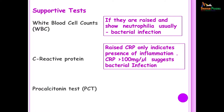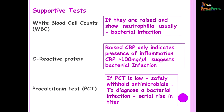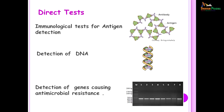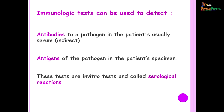C-reactive protein only indicates the presence of inflammation. However, values of more than 100 milligram per microlitre suggest a bacterial infection. Procalcitonin, if it is low, one can safely say that the person is not suffering from an infectious disease. However, if you want to demonstrate its presence in a bacterial infection you have to show a rise in titer for it to be of any significance. In the direct tests, we have the immunological tests in which we detect antigen. You can detect DNA or you can also detect genes which cause antimicrobial resistance.